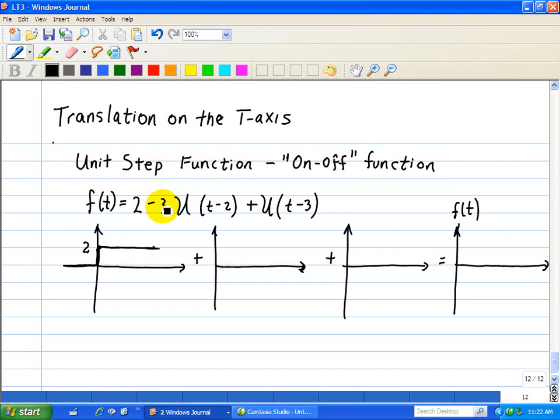Here we have minus 3 with a delay of 2. So this function is off for 2 time units, and then it has a value of minus 3. So I'll draw it as shown right here. And then we have a step function with a height of 1, and it's delayed by 3. So we have this function with a height of 1.